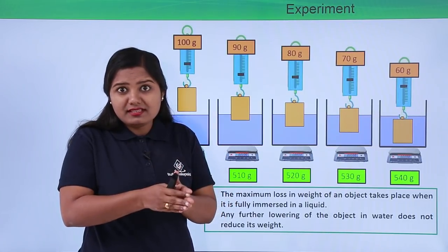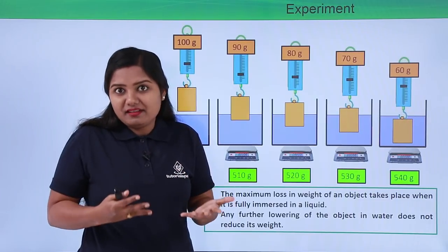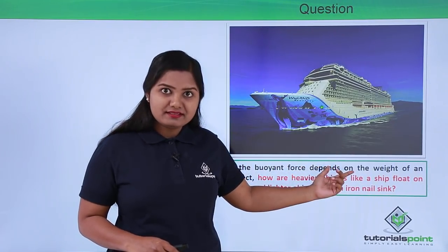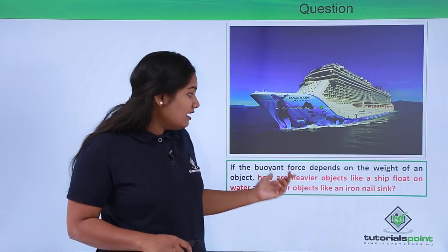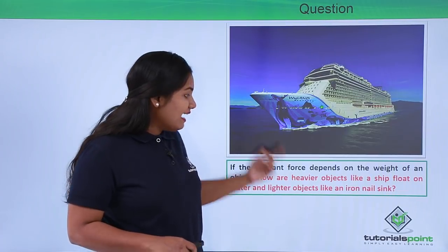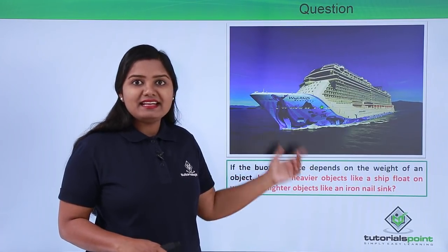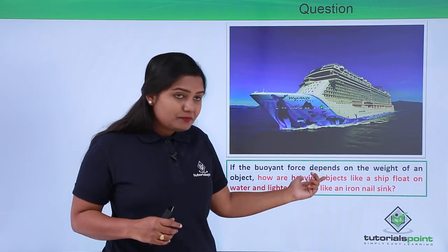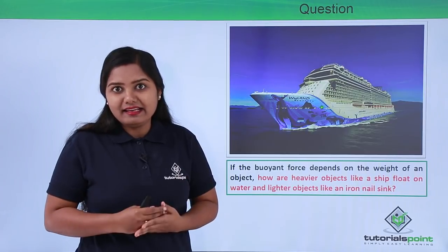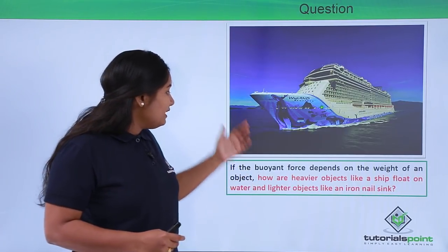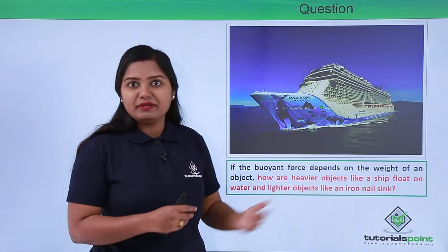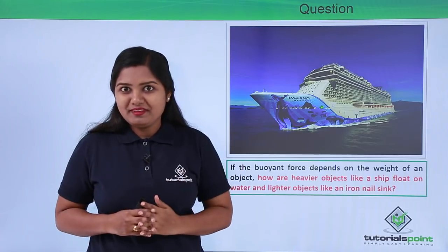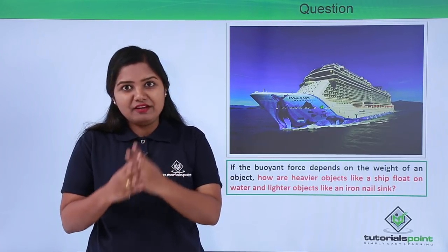The more the portion immersed inside water, the more buoyant force it experiences. Now I have a question for you: if the buoyant force depends only on the weight of an object, then how do heavier objects like ships float on water while lighter objects like iron nails sink? Ships and iron nails are both made of metal, yet ships float and iron nails sink. We need to find the reason behind this. This question is left to you, and I will answer it in my videos to come. Stay tuned, keep watching, and I hope this video was helpful. Thanks for watching.